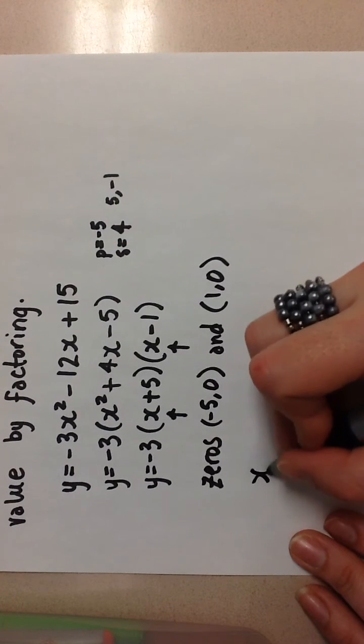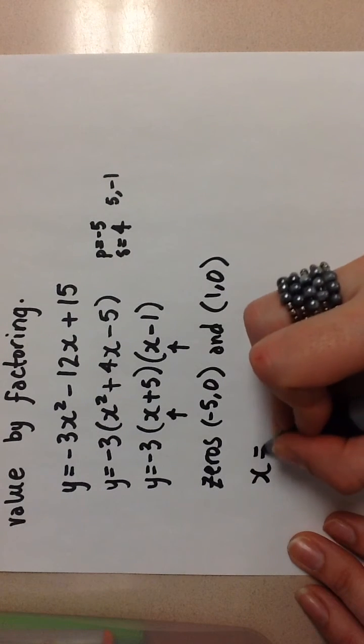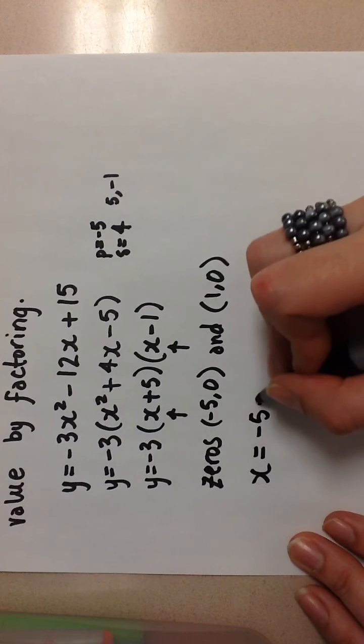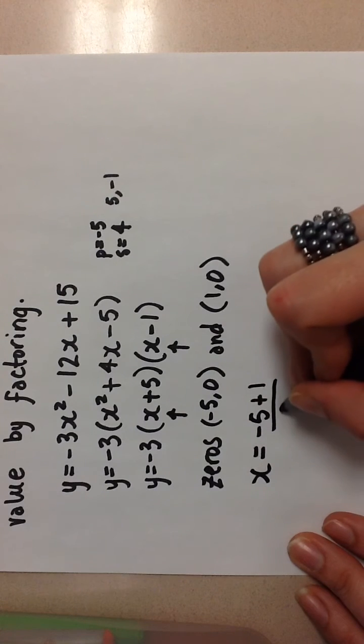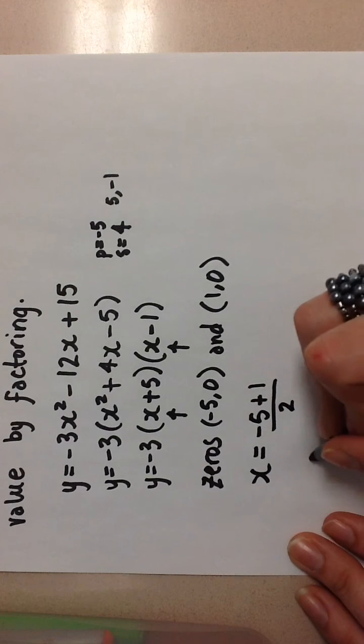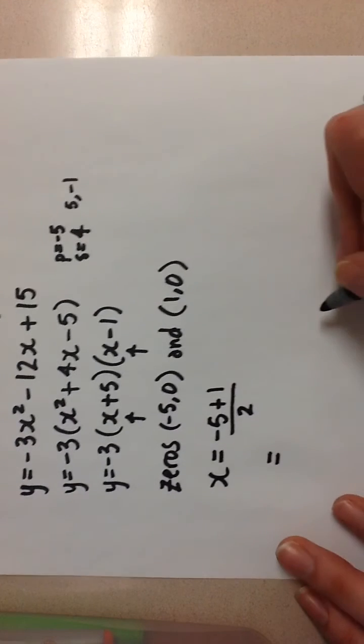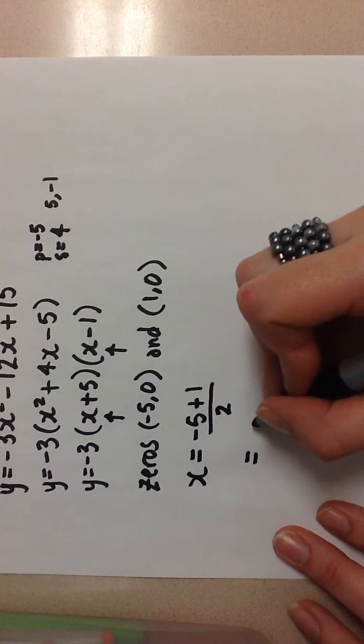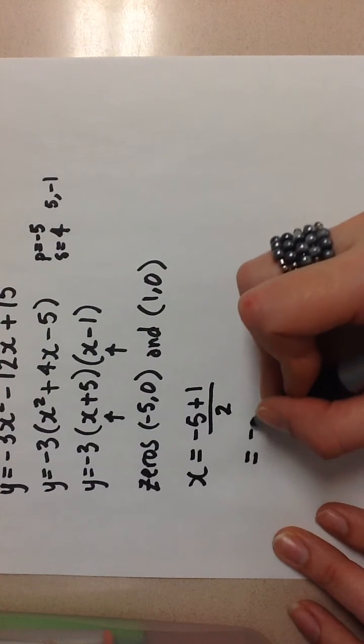To find my axis of symmetry I'm going to add the two x values and divide by 2 because the axis of symmetry is between the two. And I get negative 2.